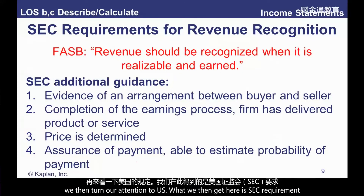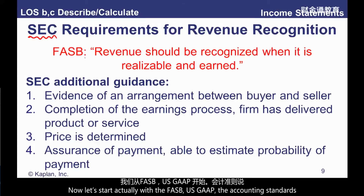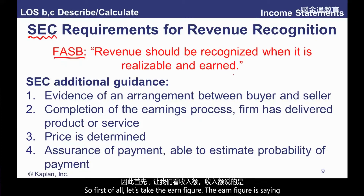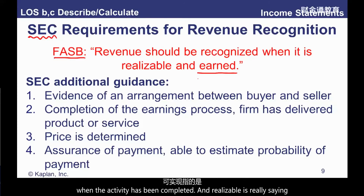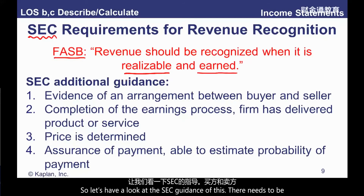Turning to US GAAP — specifically SEC requirements for listed companies. Under FASB, revenue should be recognised when it is realizable and earned. 'Earned' means revenue should be recorded when the sales activity has been completed. 'Realizable' means we need reasonable assurance that the customer will pay us. The SEC guidance says there must be evidence of an arrangement between buyer and seller — some evidence of a contract or goods being shipped.